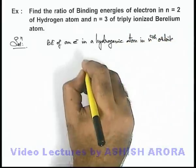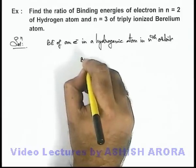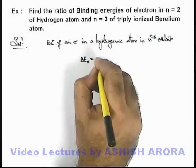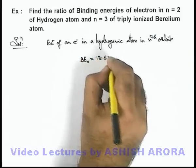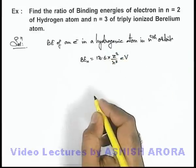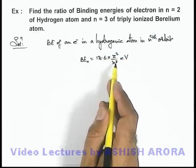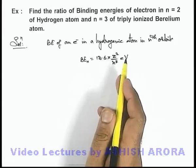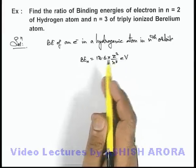is given as: binding energy in nth orbit equals 13.6 × Z²/n² electron volts. This is the amount of energy which, when supplied to the electron, its total energy should become equal to zero.